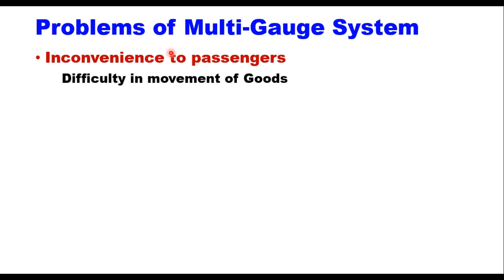The second problem is difficulty in movement of goods. Similar to passengers, goods also have to be shifted from one wagon to another at the point of junction of two gauges, which may cause damage, misplacement, or theft during transfer. Non-availability of labor, particularly during strikes, may delay the movement of goods. Additional facilities like sheds and equipment are also required to handle large amounts of goods for two different gauges.